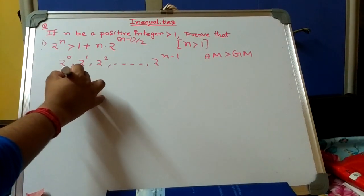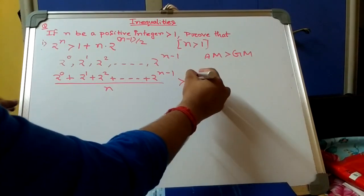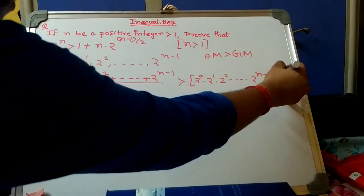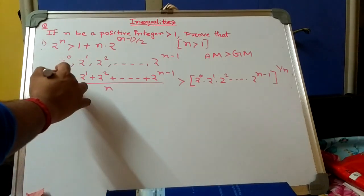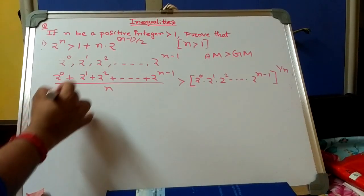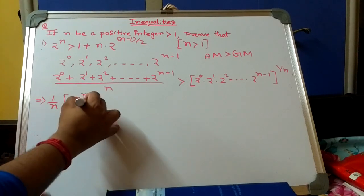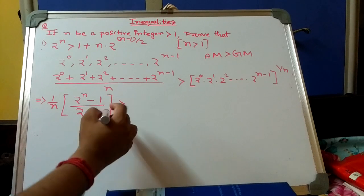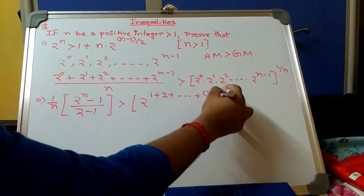The left side is a GP series with first term 1 and common ratio 2, so its sum is (2^n - 1)/(2 - 1) = 2^n - 1. Thus: (2^n - 1)/n ≥ (2^(1 + 2 + ... + (n-1)))^(1/n), which gives (1/n)(2^n - 1) ≥ 2^((n(n-1)/2) · (1/n)).